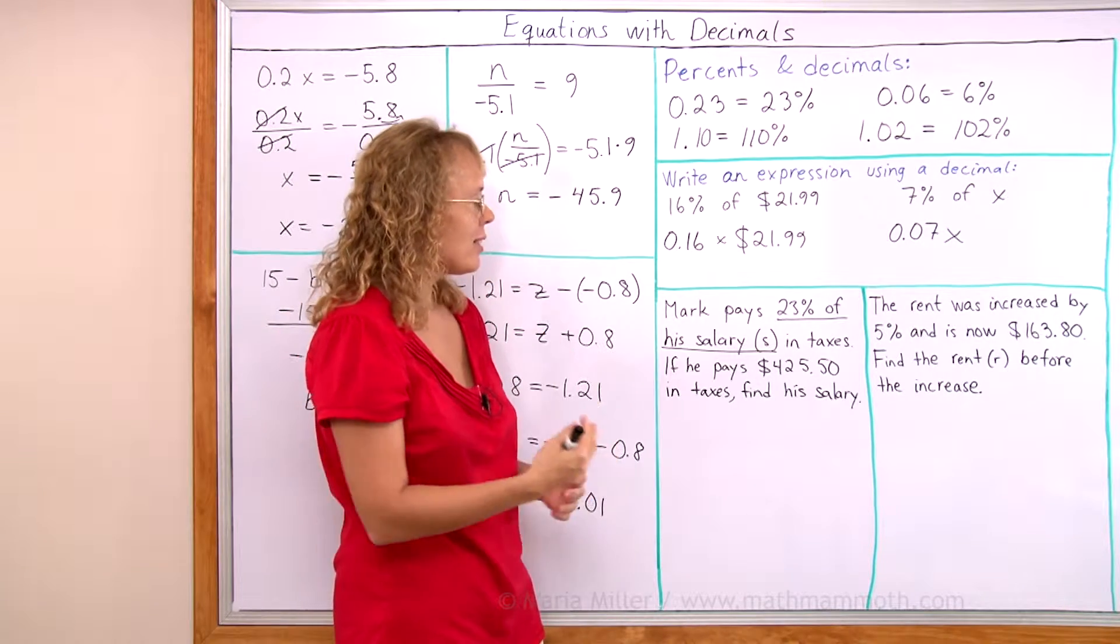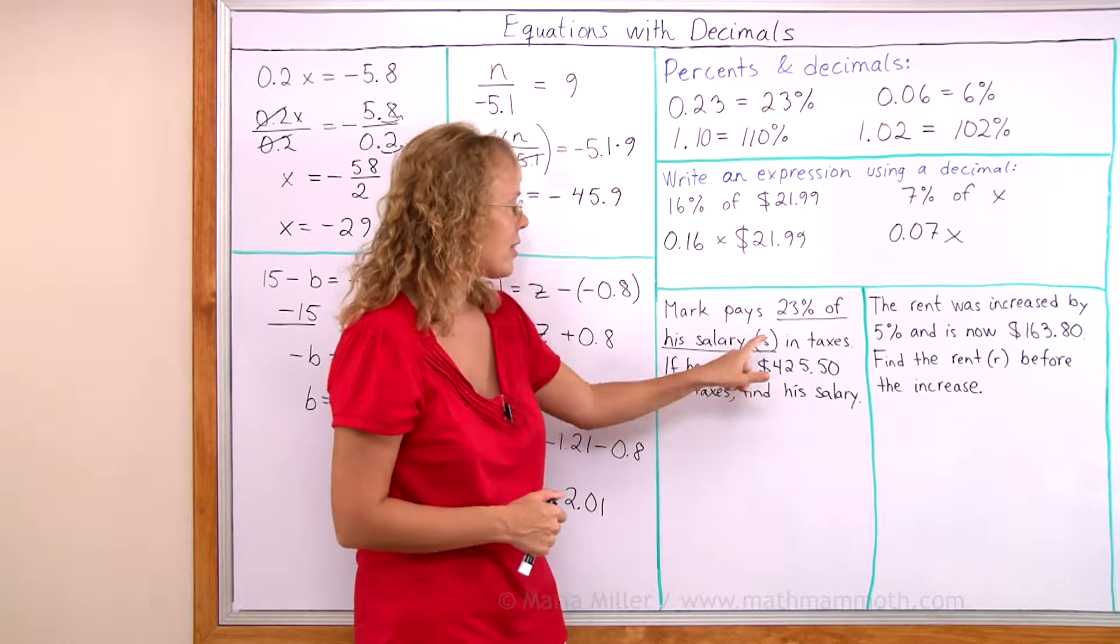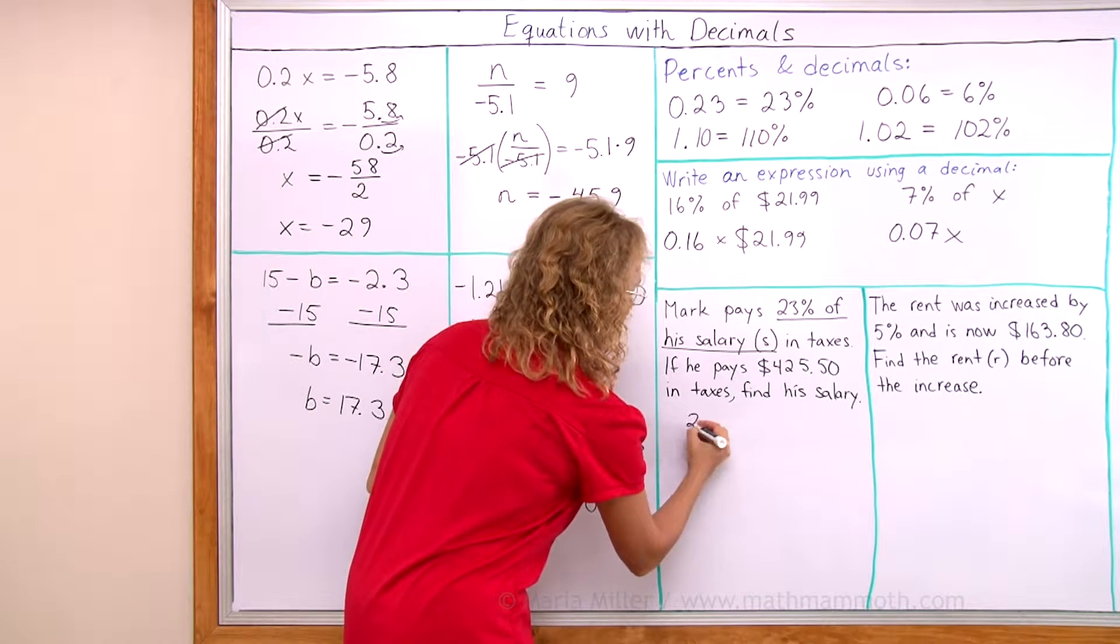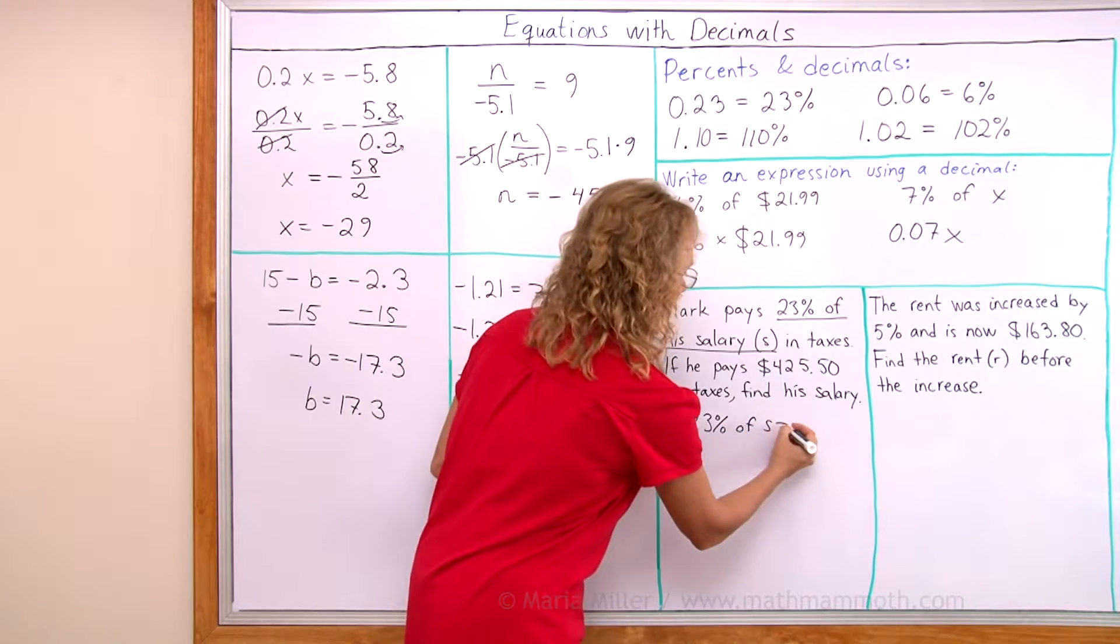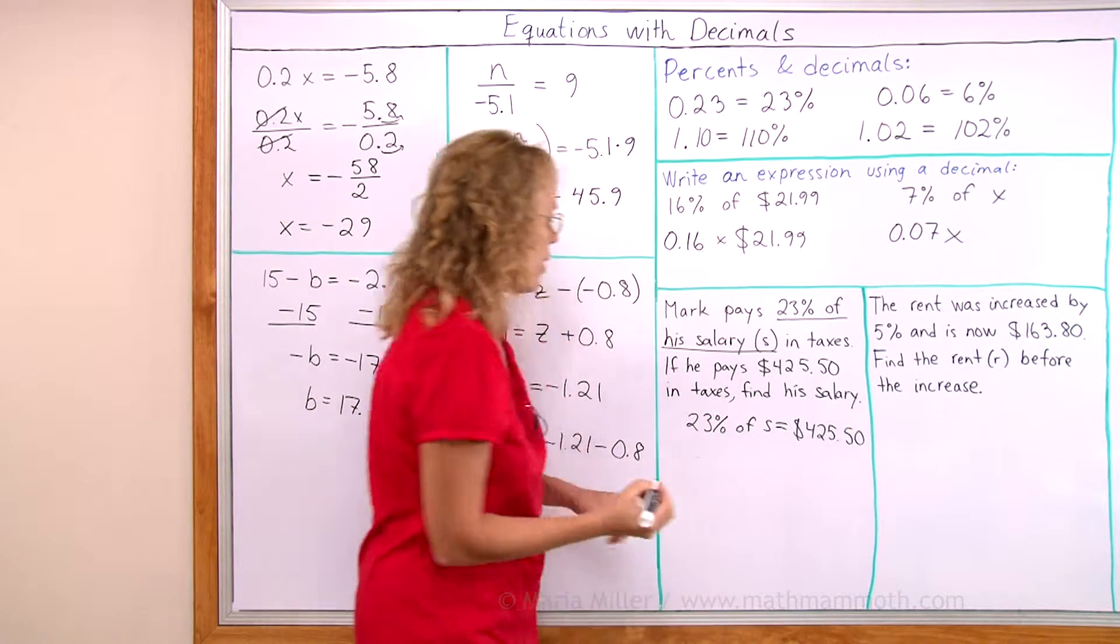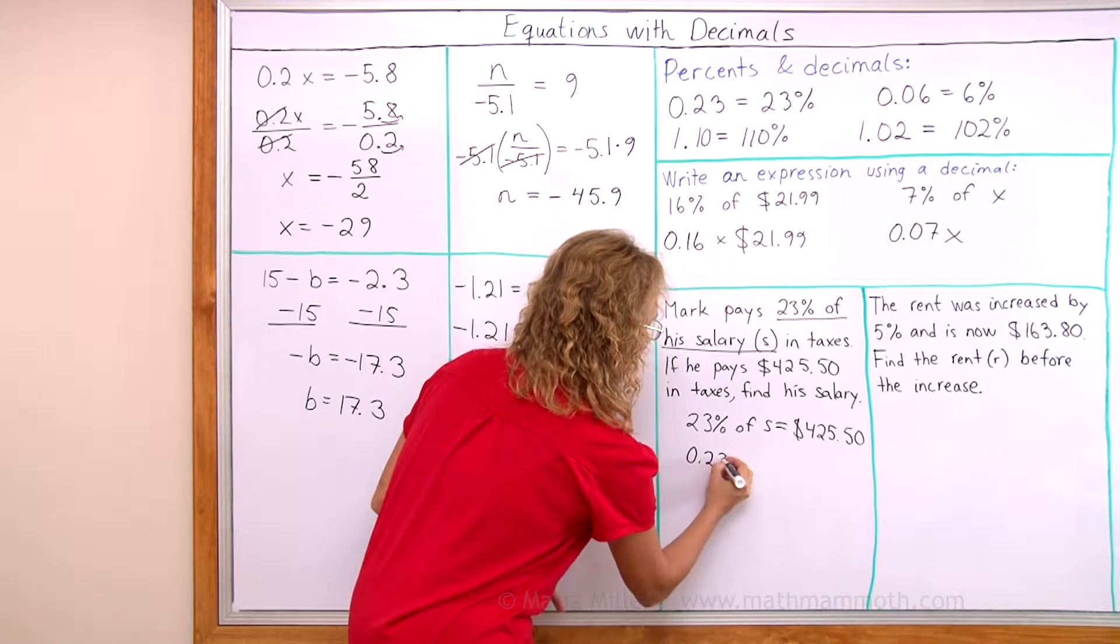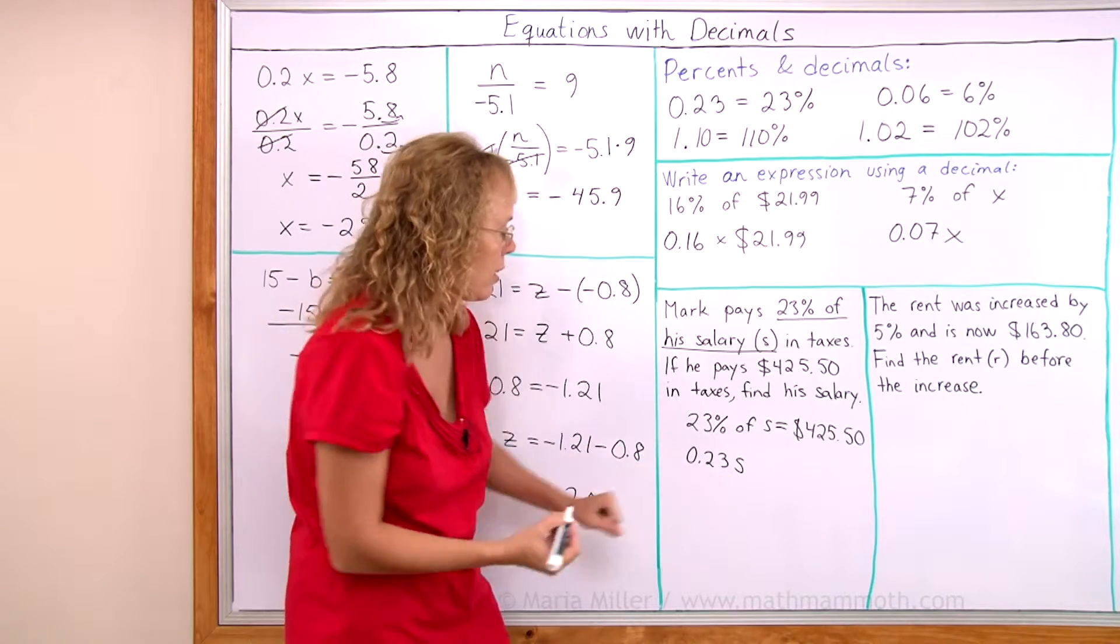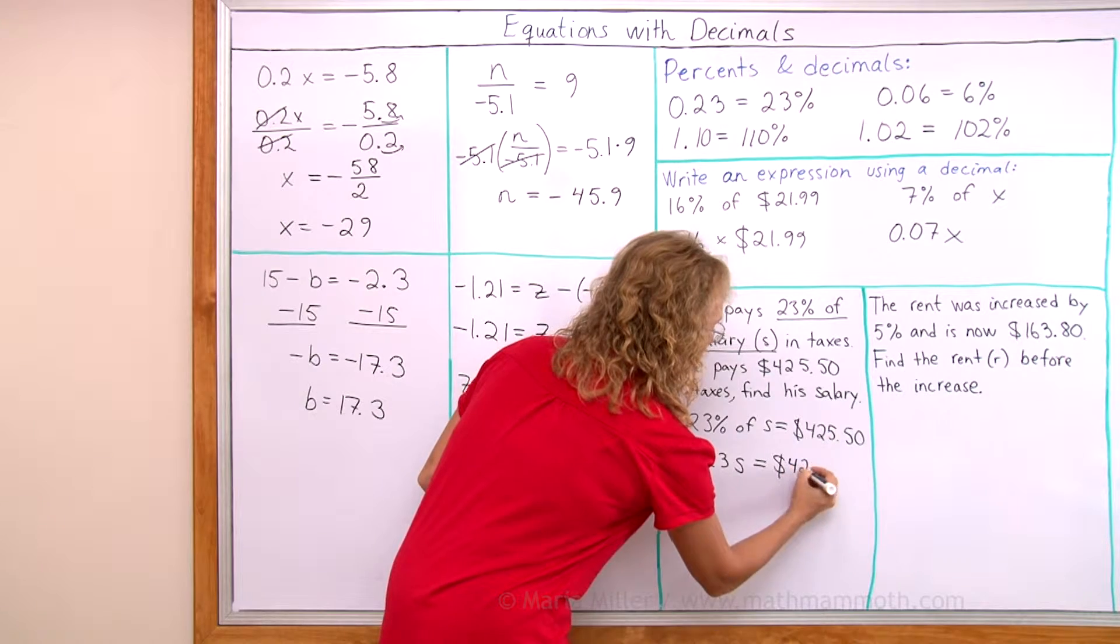And we know how much he pays in taxes. It's this amount. So 23% of s equals that amount. So at first you can think of it this way: 23% of his salary, s, equals this money amount. But now we just write this with a decimal, 0.23. 'Of' is the multiplication, but we don't need to write the multiplication symbol here. Just put 0.23s equals this money amount.